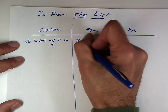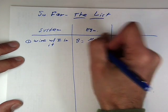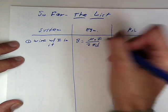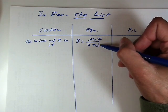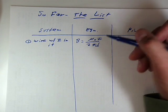We have a result: mu naught I over 2 pi d. I is the current that the wire carries, D is the distance from the wire.